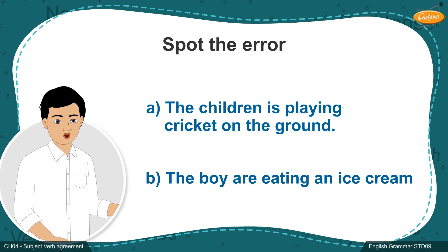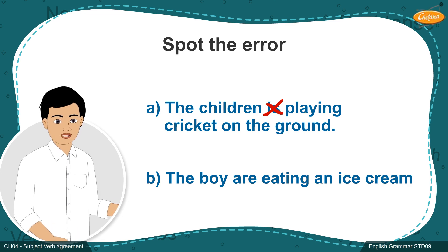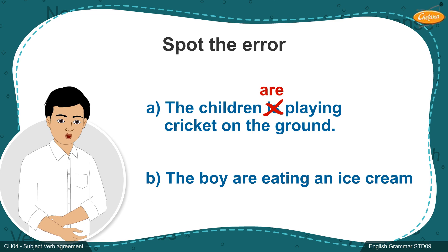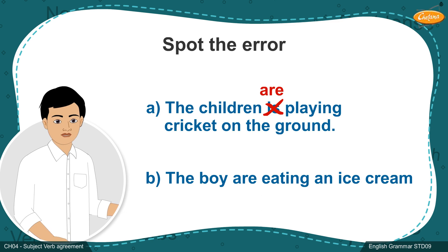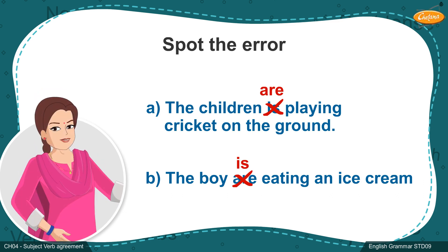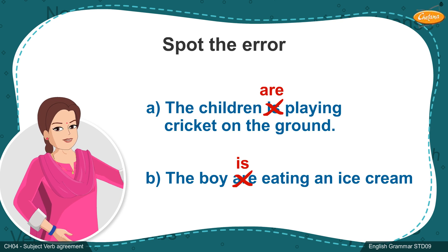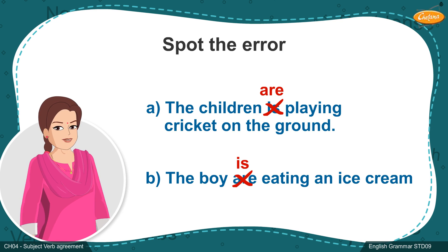In sentence A, the word 'is' is wrongly used — it does not go with the subject. It should be: 'The children are playing cricket on the ground.' Whereas in sentence B, the word 'are' is wrongly used; instead, 'is' should be used. Very good. You mean to say that the subject and verb are not in accordance. So today we are going to study subject-verb agreement.